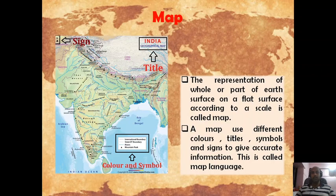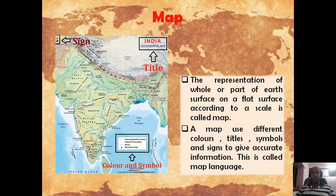As you can see in this map, different signs, titles, colors, and symbols are used. For example, 'India Geographical Map' is the title. The letter N indicates north. Blue color lines represent rivers, black color triangles represent mountain peaks.